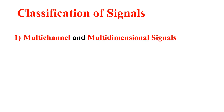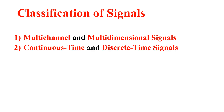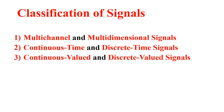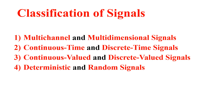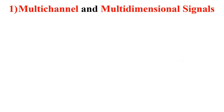Moving further, let me consider the classification of signals. Signals can be classified as: first, multi-channel and multi-dimensional signals; second, continuous time and discrete time signals; third, continuous valued and discrete valued signals; and fourth, deterministic and random signals. Now let me explain the first classification.